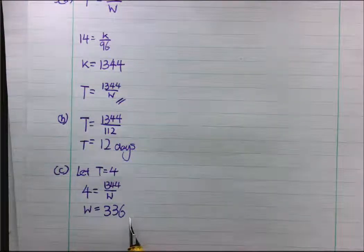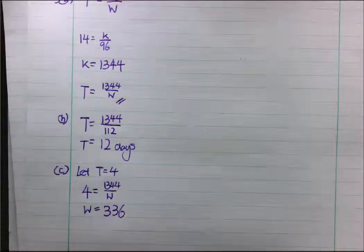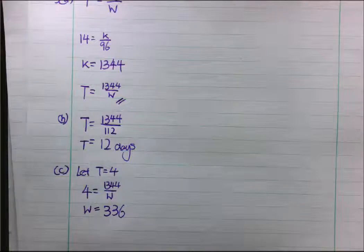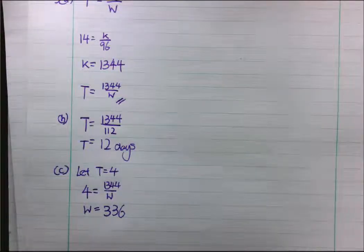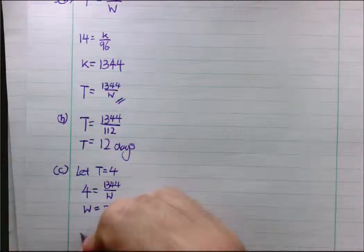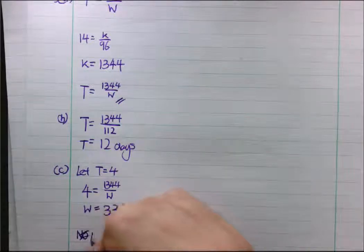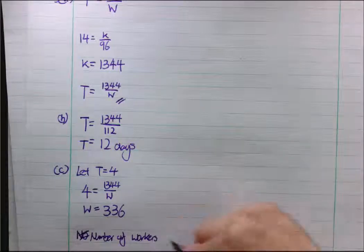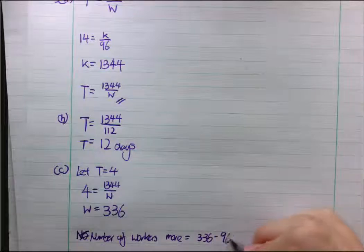Notice, 336 workers are needed to complete the works in 4 days. But the question they ask was, how many more? Originally it takes 96 workers to 14 days. So, what you must do is take number of workers more, is 336 minus 96.